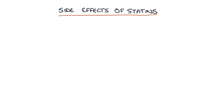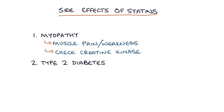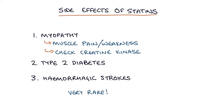A final word on statin side effects — there are three major ones worth knowing. The first is myopathy, where statins cause problems with muscle fibres, leading to muscle pain or weakness. It's worth checking creatine kinase, a muscle breakdown product, to assess for myopathy. The second is that statins can rarely cause type 2 diabetes or worsen glucose control. Third, very rarely, statins have been linked with hemorrhagic strokes. However, the benefits of statins usually far outweigh the risks, and newer statins like atorvastatin are generally very well tolerated.